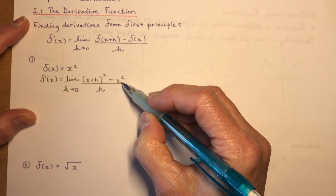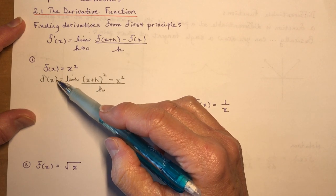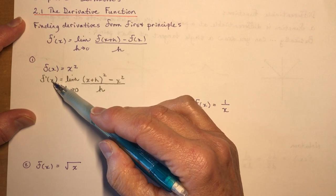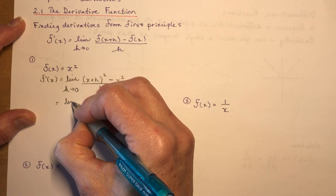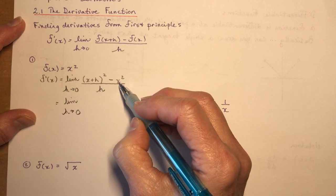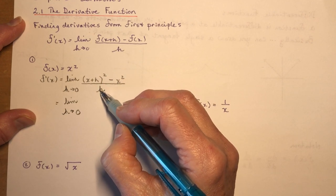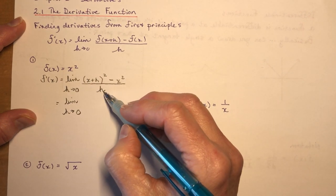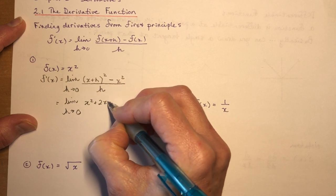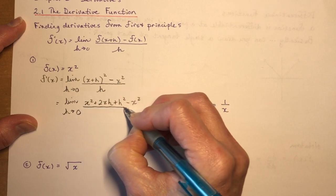As we discussed earlier, we want to find what is the slope for any value of x. In order to complete this, I need to expand and simplify. Remember that somehow we're going to get rid of this x squared because everything in the top has to have an h.